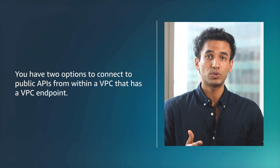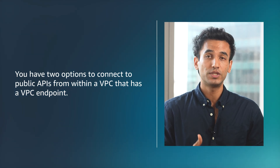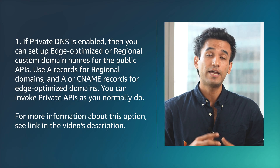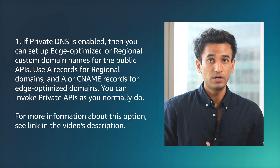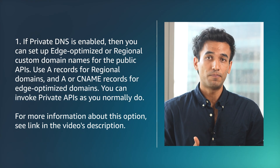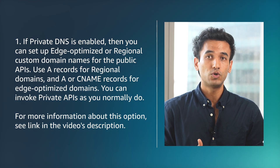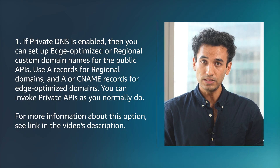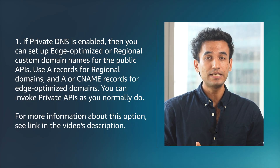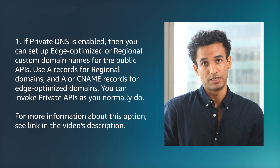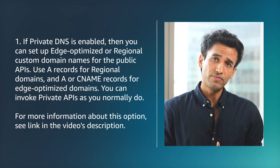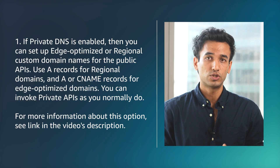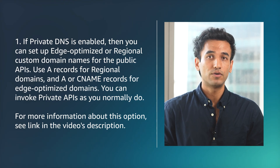You have two options to connect to public APIs from within a VPC that has a VPC endpoint. First, if private DNS is enabled, then you can set up edge-optimized or regional custom domain names for the public APIs. Use A records for the regional domains and A or CNAME records for edge-optimized domains. You can invoke private APIs as you normally do. For more information about this option, see the link in the video's description.